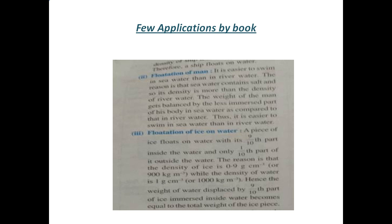A piece of ice floats on water with its 9/10th part inside the water and only 1/10th part of it outside the water. The reason is that the density of ice is 0.9 gram per centimeter cube, or 900 kg per meter cube, while the density of water is 1 gram per centimeter cube, or 1000 kg per meter cube. Hence, the weight of water displaced by the 9/10th part of ice immersed inside the water becomes equal to the total weight of the ice piece.